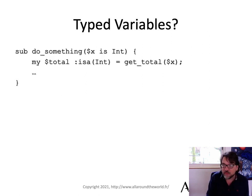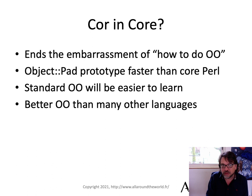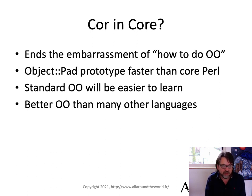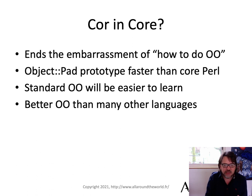We could possibly have typed variables. So Cor, if we're going to get it into the core, the nice thing is it ends the embarrassment. How do you do OO in Perl? You don't want to explain blessing references to people.